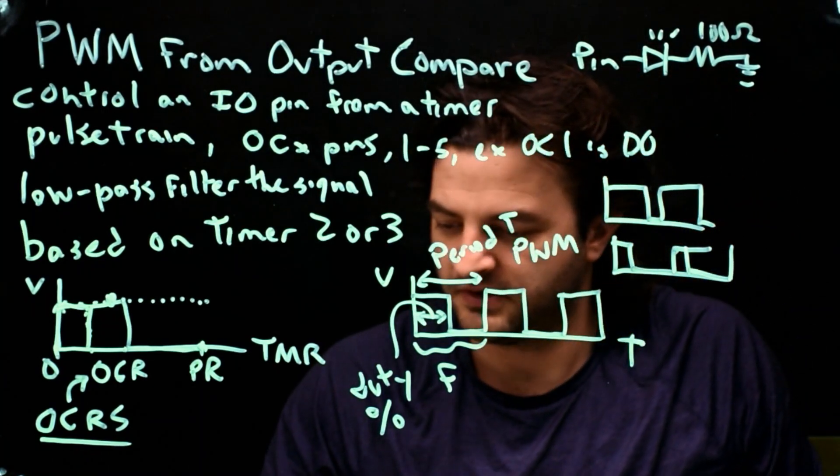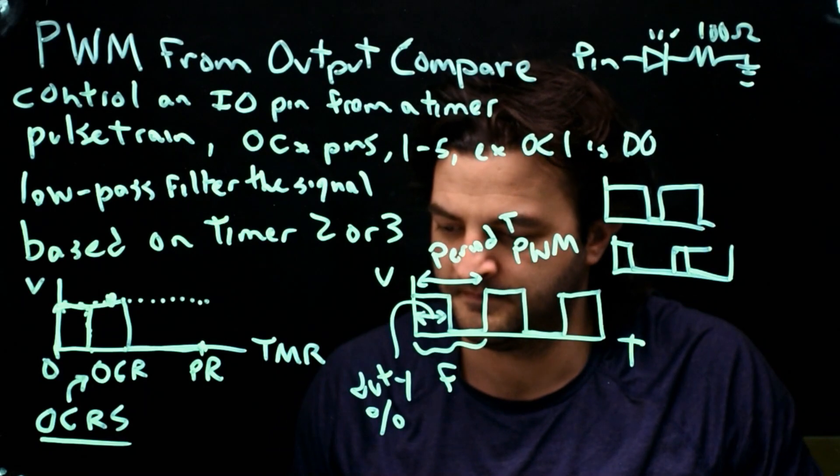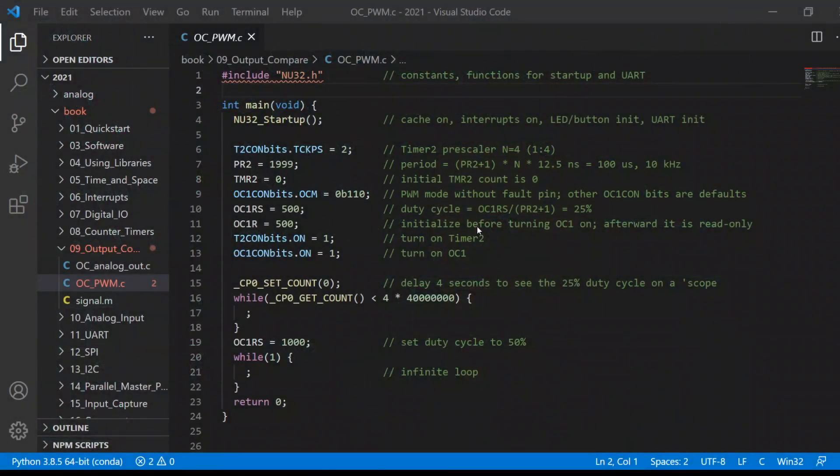But let's take a look at some sample code. This is from our chapter nine on output compare in the textbook. And we see that what we're trying to do here is make PWM at 10 kilohertz. So a square wave at 10 kilohertz. And we'll control the duty cycle from zero to 100%. And a good question is, what is the resolution of our duty cycle? How many different duty cycles can we use? So in this case, we chose a prescaler of two.